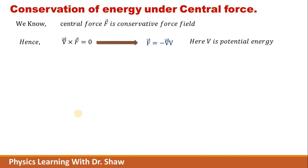So here we are choosing V as a scalar, and V is nothing but potential energy. Central force F can be written as minus gradient of V. Why the minus sign? The minus sign is just for our convenience.